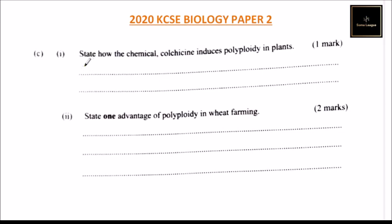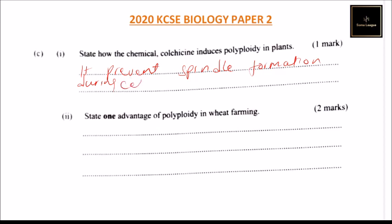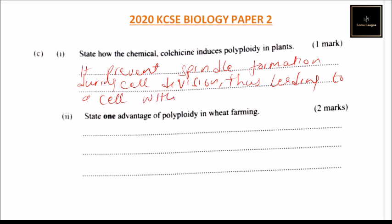The answer to this question is: it prevents the formation of the spindle during cell division, leading to a cell with an extra set of chromosomes.